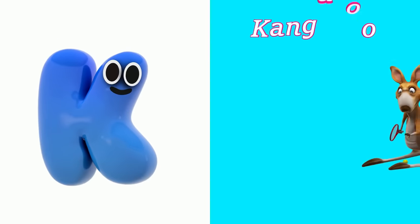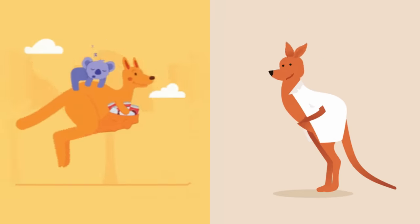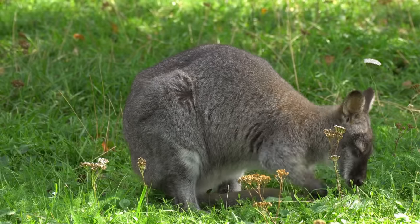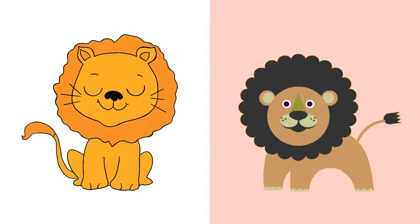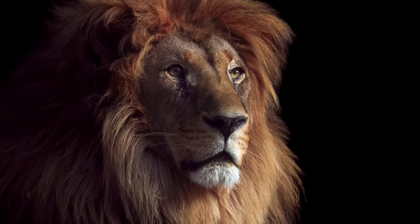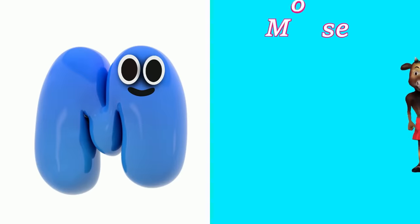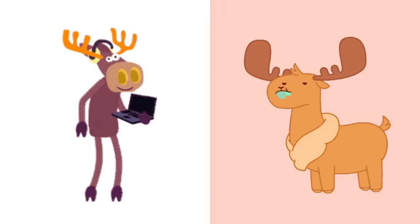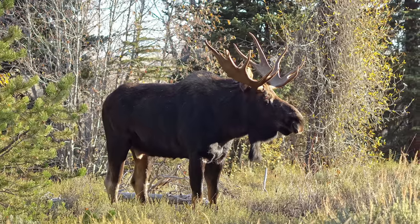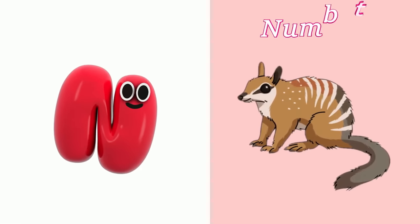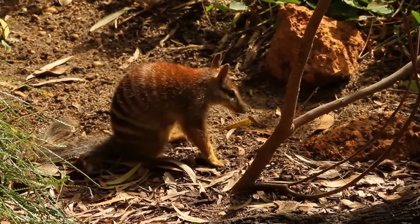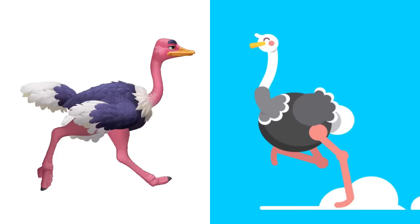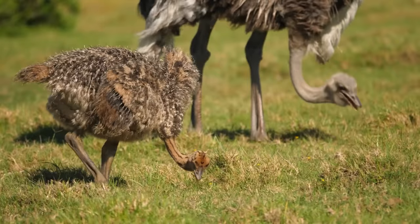K is for Kangaroo. K, K, Kangaroo. L is for Lion. L, L, Lion. M is for Moose. M, M, Moose. N is for Numbat. N, N, Numbat. O is for Ostrich. O, O, Ostrich.